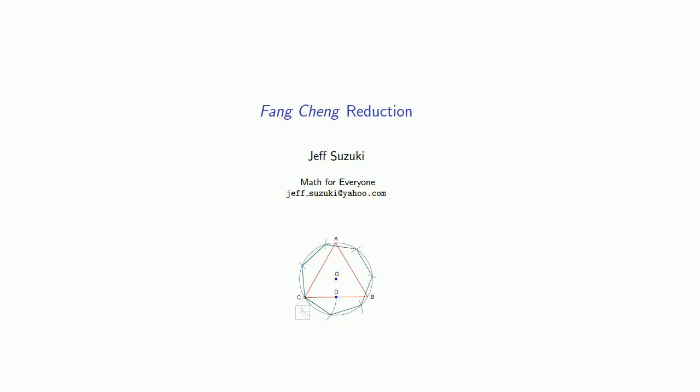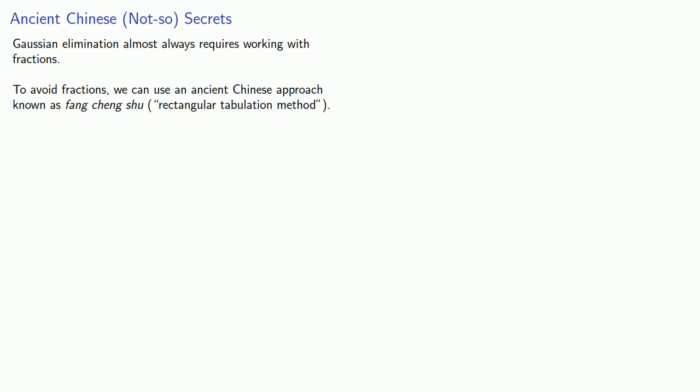While Gaussian elimination is a perfectly good way of producing the row echelon form of a matrix, it almost always requires us to work with fractions. Fortunately, we can avoid using fractions using an ancient Chinese approach known as Fang Cheng Shu, which translates roughly as Rectangular Tabulation Method. And this works as follows.